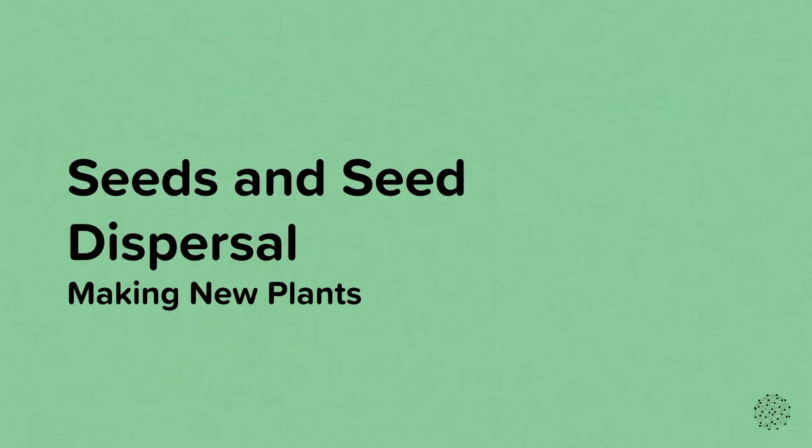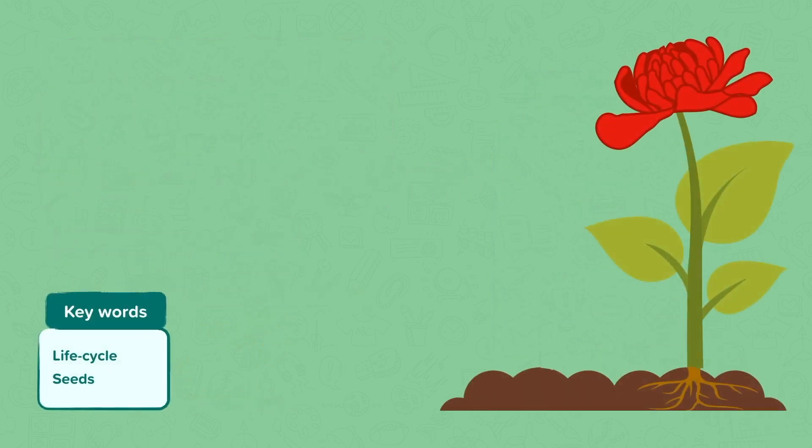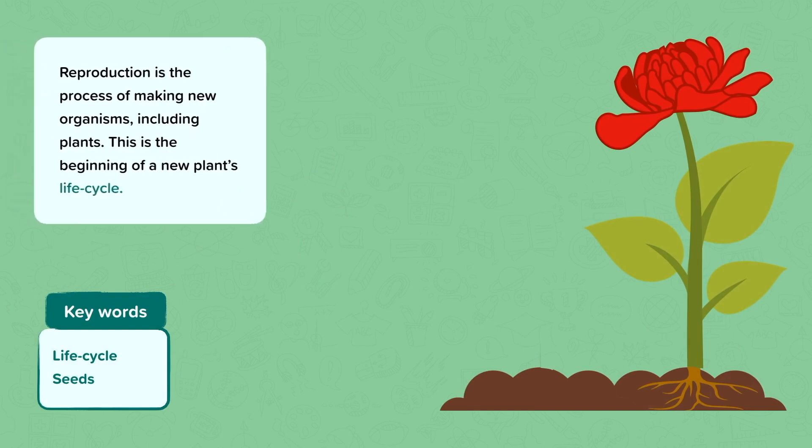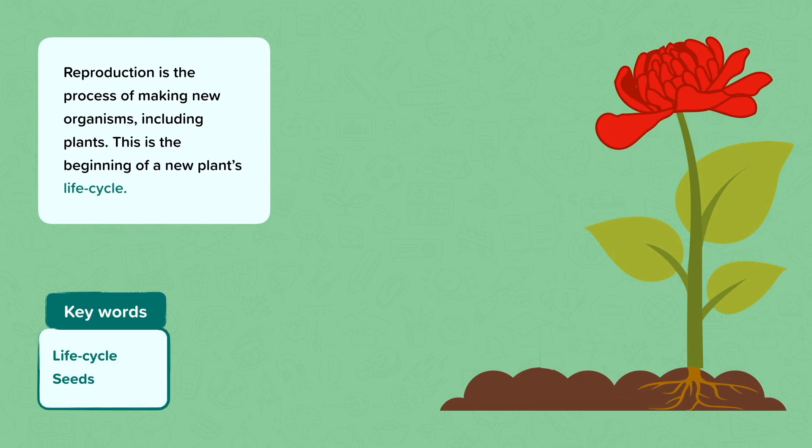Making new plants. Reproduction is the process of making new living things. This includes plants. This is the beginning of a new plant's life cycle.